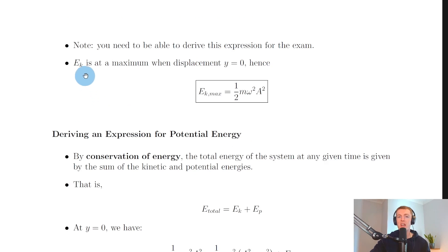The kinetic energy is at a maximum when displacement y = 0. Remember from the previous video that an object has its maximum velocity and therefore maximum kinetic energy at y = 0, the equilibrium position.